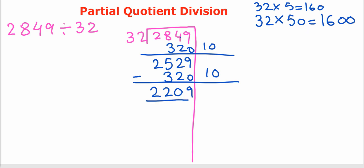So 1600 is less than 2209. I want to use this here. 32, 50 times is 1600. What is left with us? 9, 0, 22 minus 16 is 6. So now I will have 609.